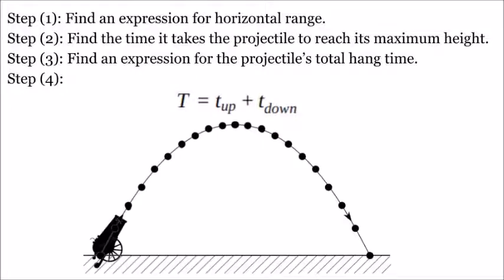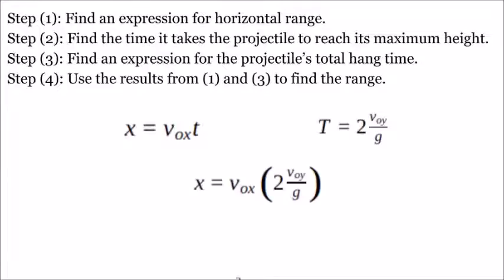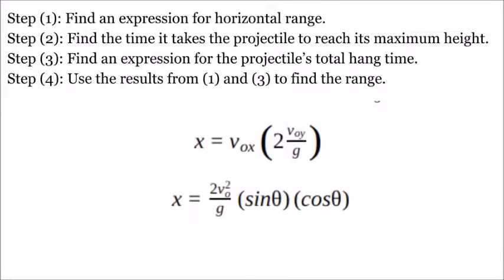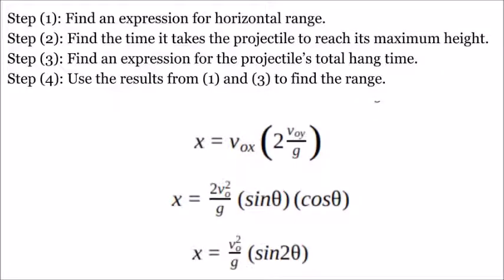Step 3. Find an expression for the projectile's total hang time. Pretty simple. It's just the time it takes to go up plus the time it takes to come down, which, since we are symmetric, are the same. Meaning we are ready for step 4. Using the results of this and that to find the range. Which gives us a chance to use the cheat sheet, the double angle formula, and a chance to remember our mission.